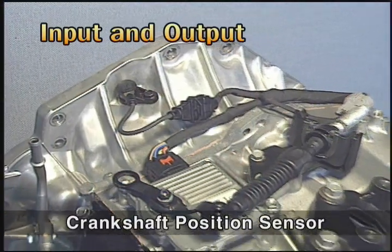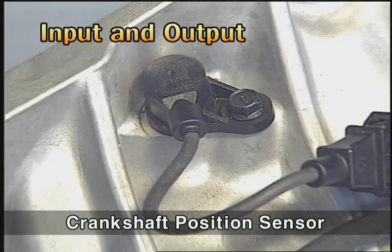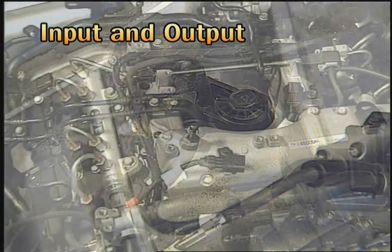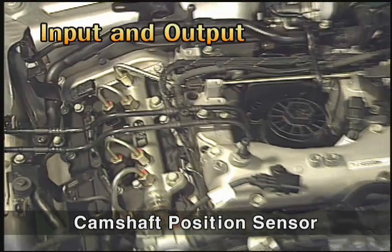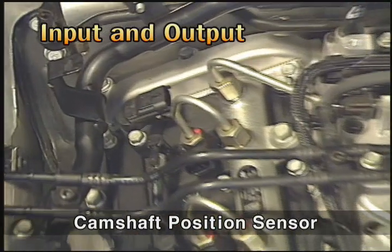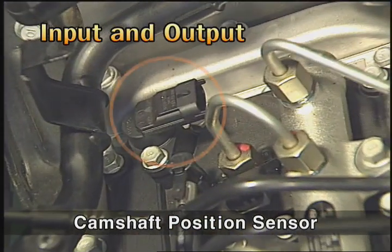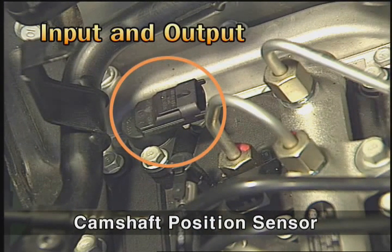The crankshaft position sensor is used for detecting the RPM of the engine. The camshaft position sensor is used for detecting the compression TDC of the first cylinder.